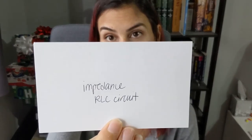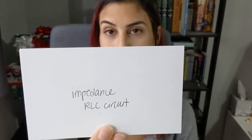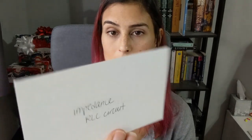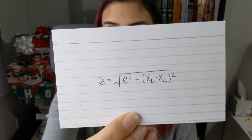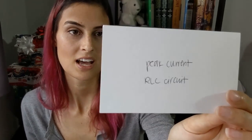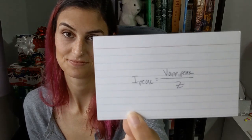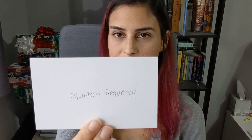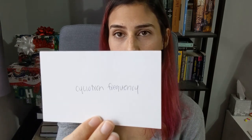The impedance of an RLC circuit is given by Z, which equals the square root of R squared plus the quantity X sub L minus X sub C squared. The peak current of an RLC circuit: I peak equals the applied peak voltage over Z. Cyclotron frequency: omega equals QB over m.